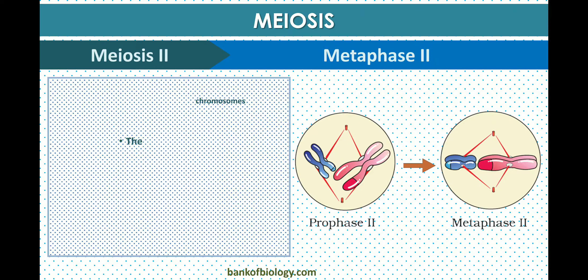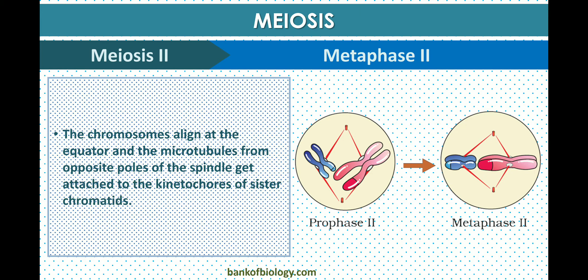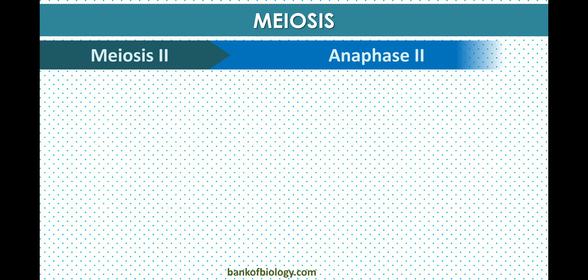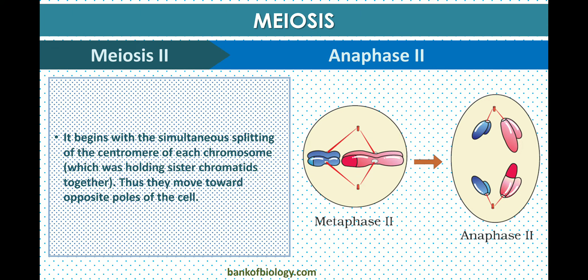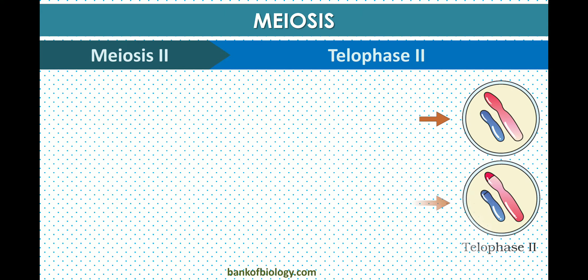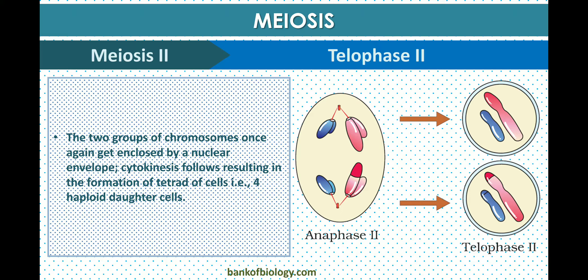In metaphase two, chromosomes align at the equator and microtubules from opposite poles of the spindle attach to the kinetochores of the sister chromatids. In anaphase two, the centromeres of each chromosome split simultaneously, and the chromatids move toward opposite poles of the cell.